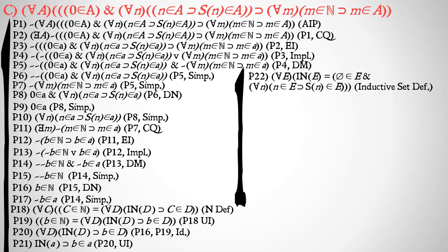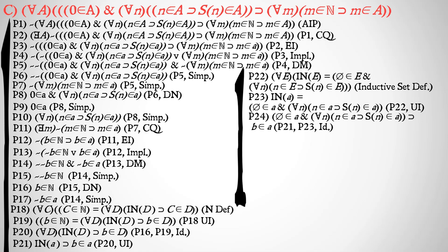So let's see how we can do that exactly. The first thing we're going to do is state the definition of an inductive set: for all E, E is inductive is identical to the null set is a member of E, and for all N, N is a member of E implies that the successor of N is a member of E. Hopefully those look familiar. If we universally instantiate E to A, you should see that we have those two halves of the conjunction. We're going to use premise 21 and 23 identity — in 21 we have A is inductive, and in 23 it's equal to the full definition. So we'll take the second half of that identity in premise 23 and put it into the first half of the implication in premise 21 to get: the null set is a member of A, and for all N, N is a member of A implies the successor of N is a member of A, implies B is a member of A.